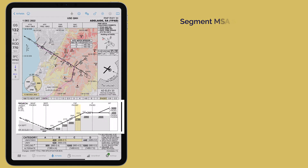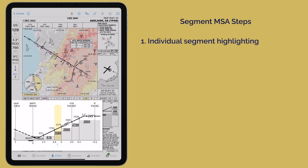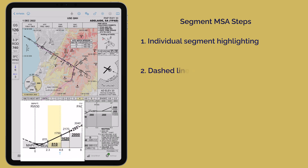The terrain steps on the approach plate will also dynamically highlight based on your current sector. As you progress through the sector, a small dotted line visually tracks your progress.